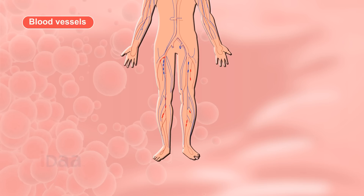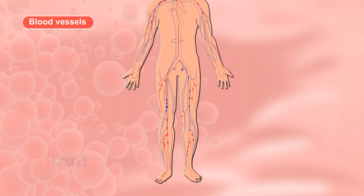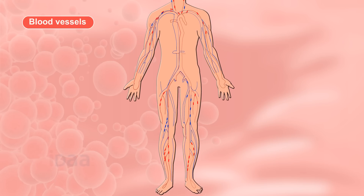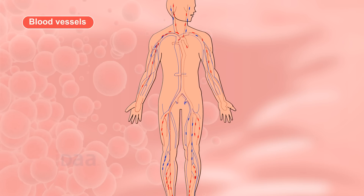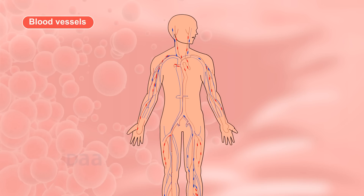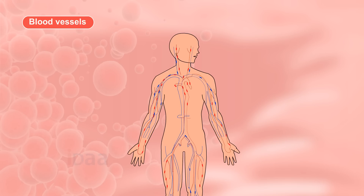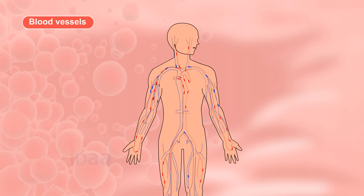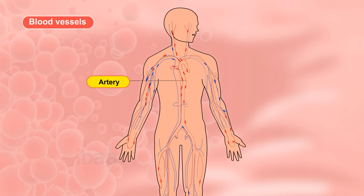Blood Vessels. As blood is a fluid tissue, it requires vessels to move in the body. Blood moves in the body through blood vessels. There are two types of blood vessels: arteries and veins.